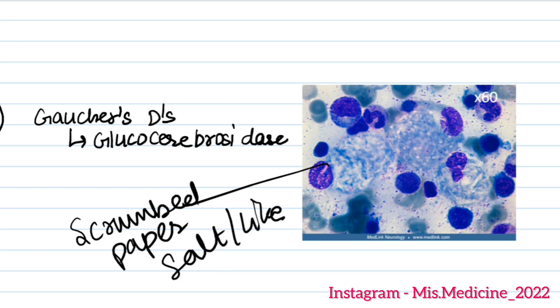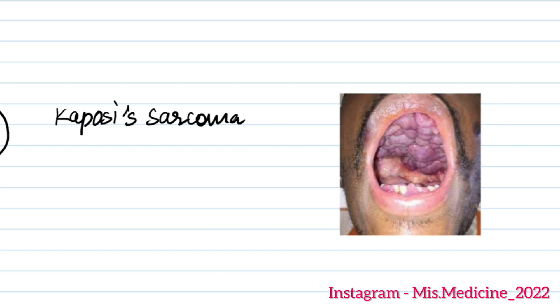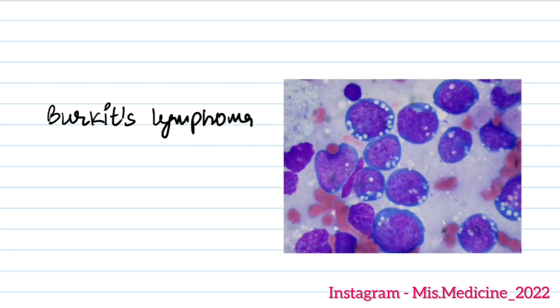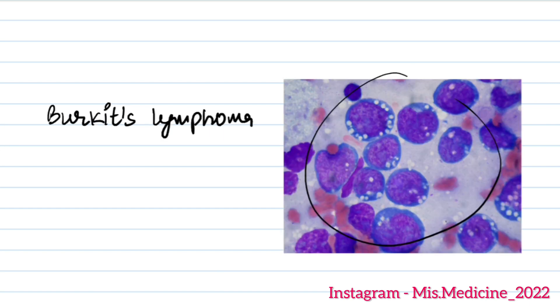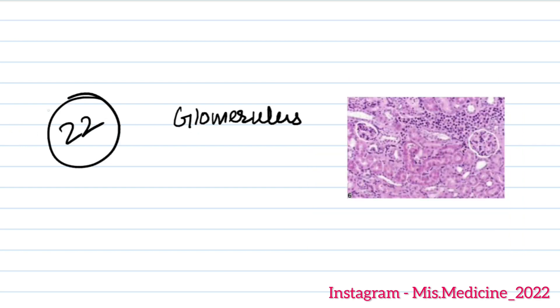The next image shown was Kaposi's sarcoma. Then Burkitt's lymphoma image was given as question 20. Question 22 was a glomerulus case related to pathology.